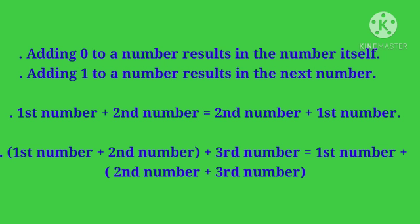Adding zero to a number results in the number itself. Adding one to a number results in the next number. First number plus second number is equal to second number plus first number. First number plus second number plus third number is equal to first number plus second number plus third number.